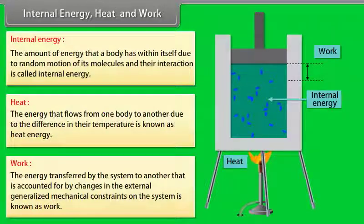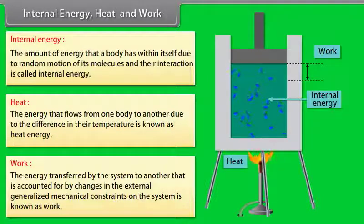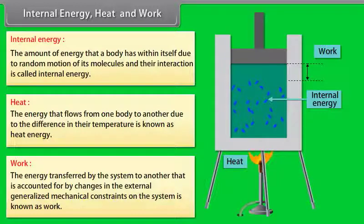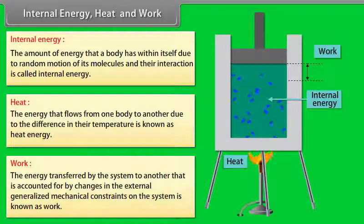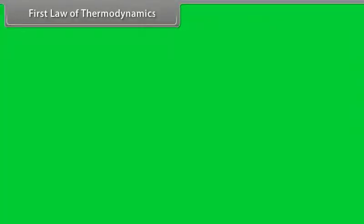Let's take an example. A gas is kept in a container with a piston mounted at the top. The container is heated from the bottom. Gas molecules are in random motion due to their internal energy. Heat energy given to the gas molecules raises the temperature and they expand. When molecules expand, a large volume is covered. This displacement is the work done.